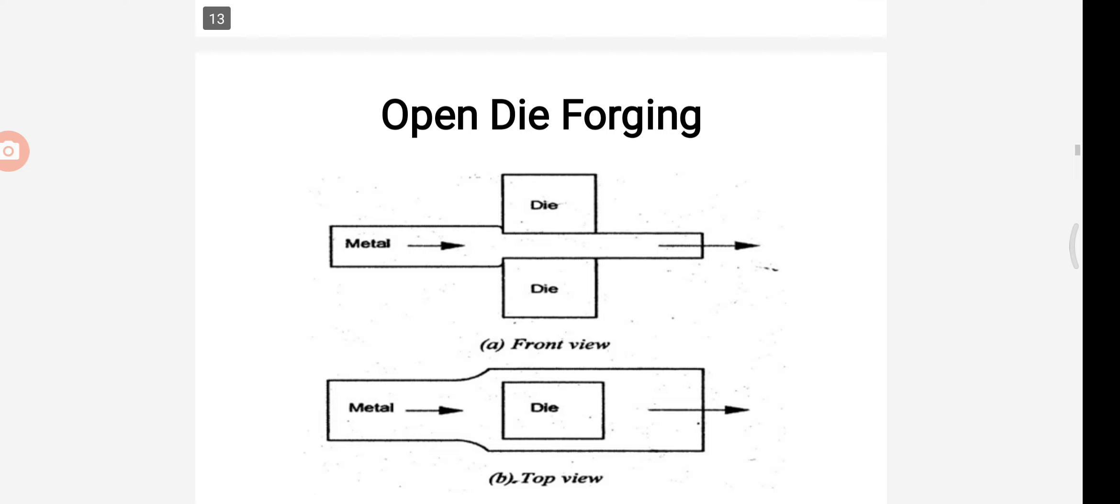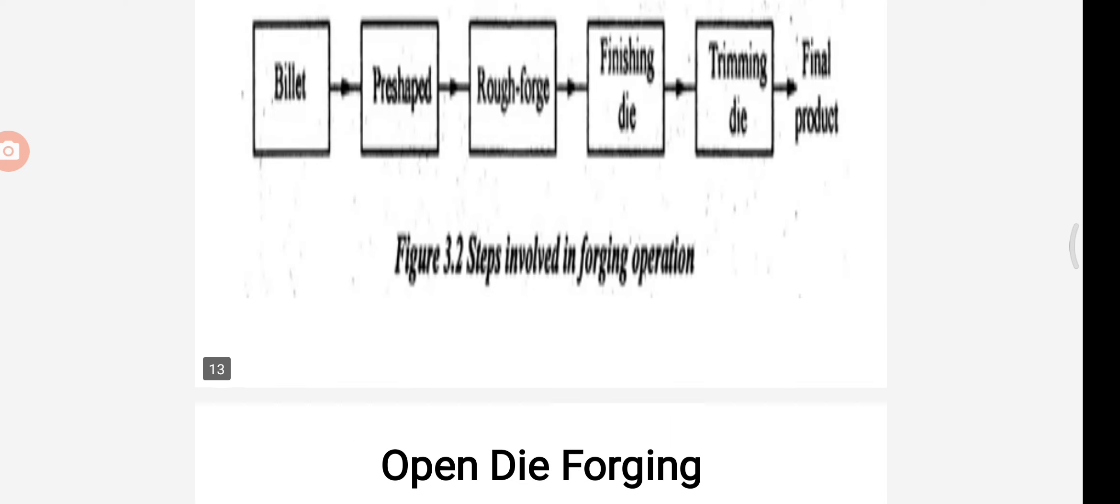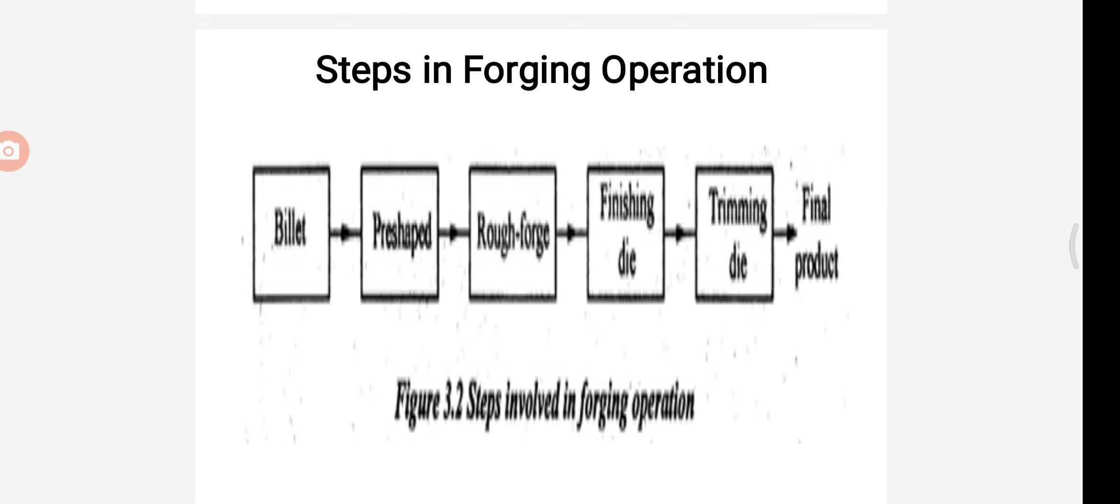Here we are going to see about what are the steps involved in forging. Forging process starts performing of a round or square piece from a forging blank or bar stock. This is the billet. The open die forging is often used to perform or pre-shape the workpiece for closed die forging.